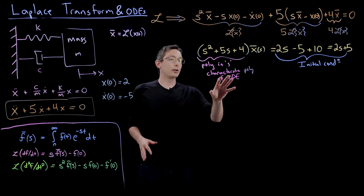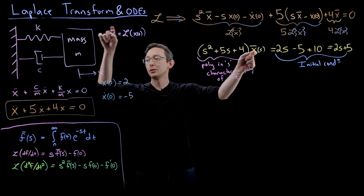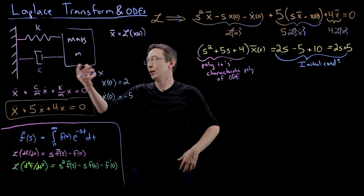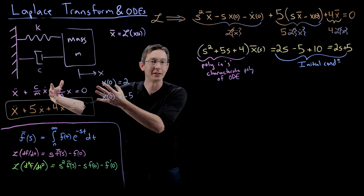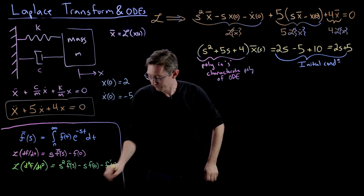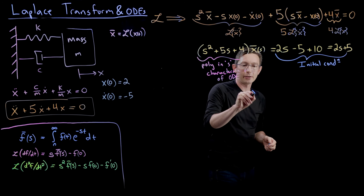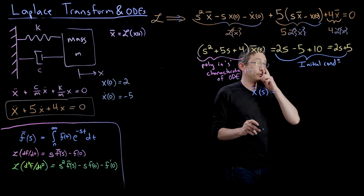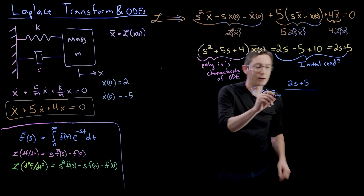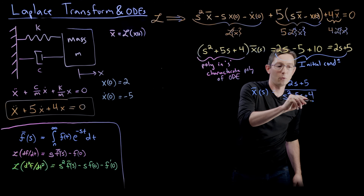Now I'll divide both sides by this polynomial to solve for X-bar. Because what I want at the end is X(t) — the position in time, the solution of my differential equation. So I solve for X-bar and then take the inverse Laplace transform. X-bar of S equals 2S plus 5 over the characteristic polynomial S squared plus 5S plus 4.